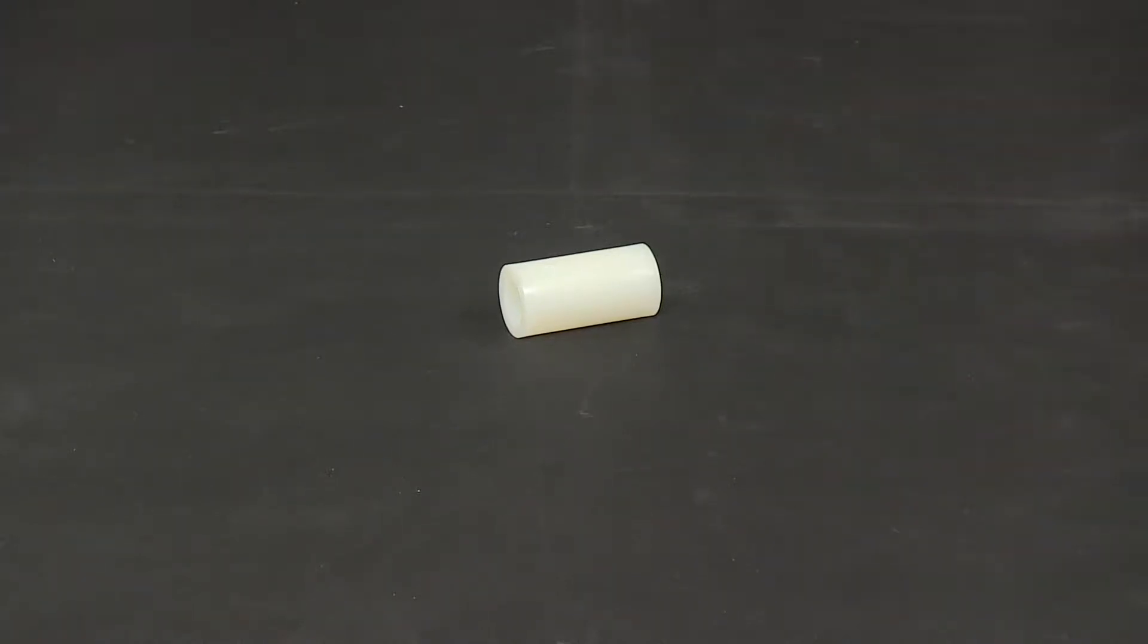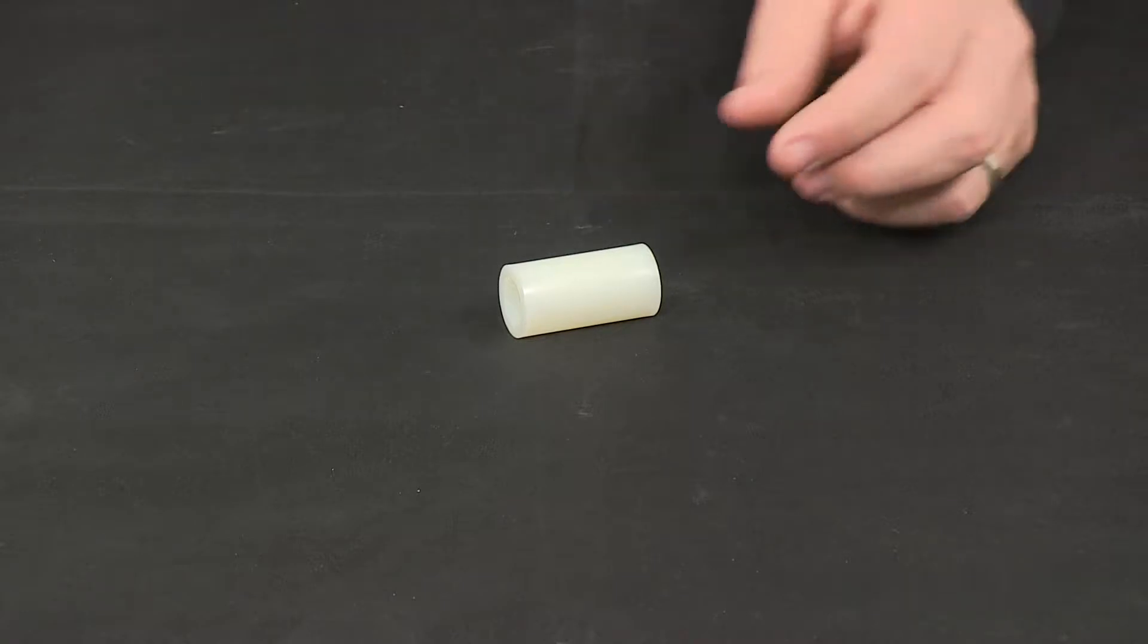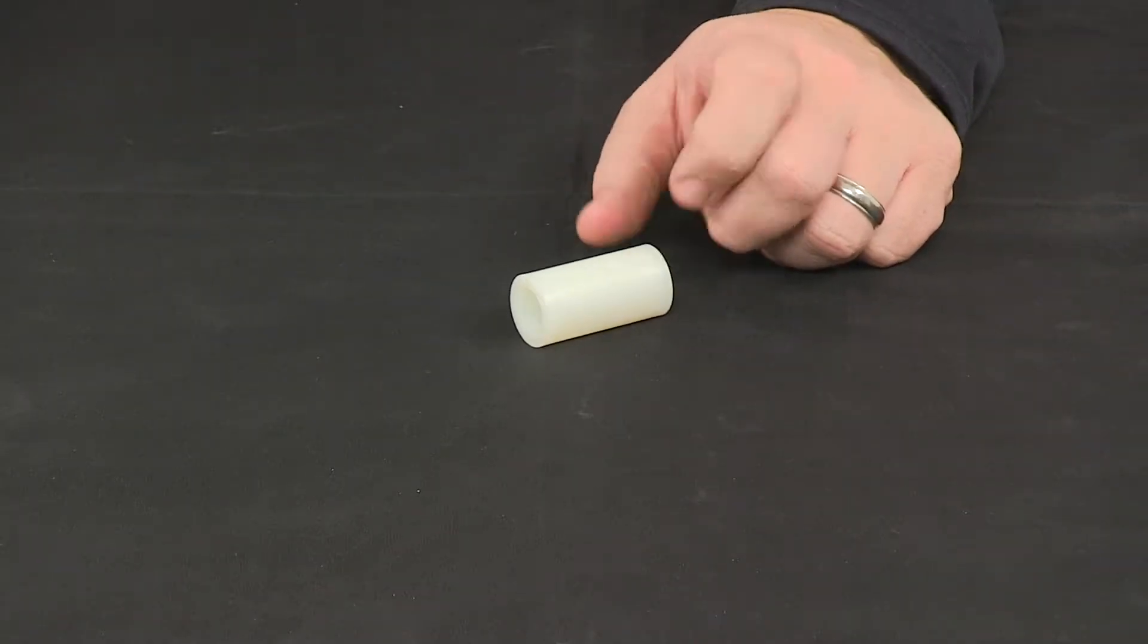Today we're going to be taking a look at a one and three quarter inch long nylon bushing. This nylon bushing is designed for use with trailer suspension systems.